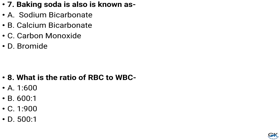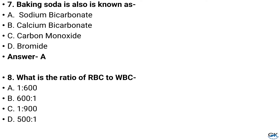Question number 7. Bleaching soda is also known as — Option A: Sodium bicarbonate, Option B: Calcium bicarbonate, Option C: Carbon monoxide, Option D: Bromide. And the answer is Option A: Sodium bicarbonate.